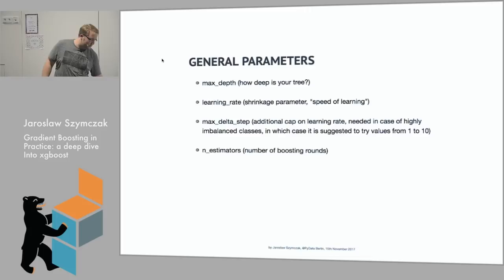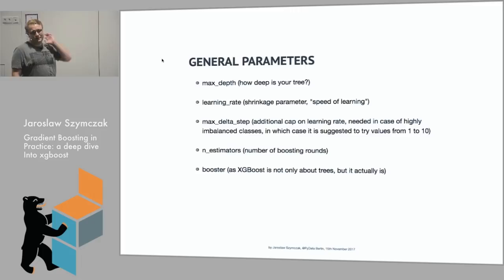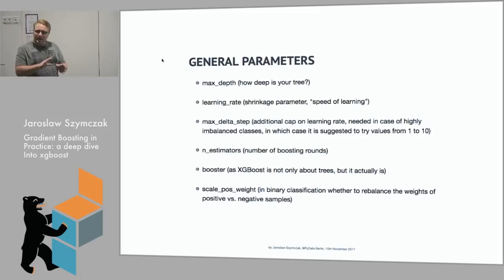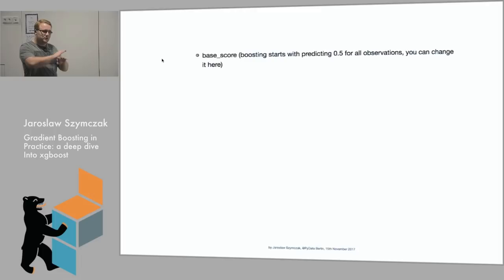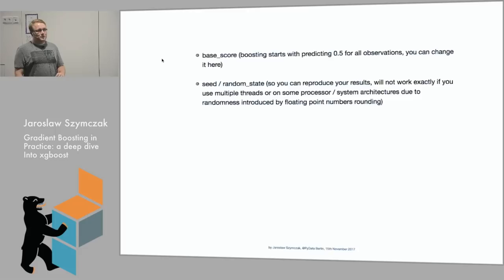Then, number of estimators, which is basically number of boosting rounds. You can choose the booster. It doesn't have to be tree, but I already mentioned that most of the time we use trees. Then, there is some possibility to scale the weights of positive and negative samples. We can also alter the base score. As I mentioned in this first round, with XGBoost, we never fit the original data, the original score. There is some baseline for regression. It would be like a mean of all the values. And for classification, 0.5. So we are totally unsure where to classify this binary problem.